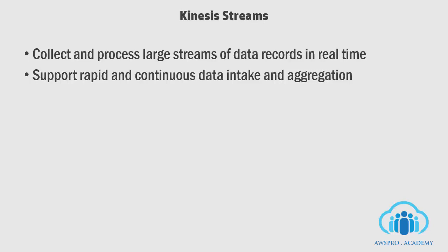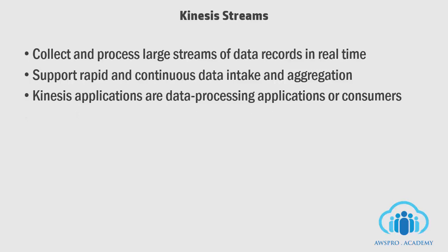The data processing application which consumes data from Kinesis Streams is known as an Amazon Kinesis application. They read data from Kinesis Streams as data records. These applications can use the Kinesis Client Library (KCL) or SDK and they can run on any Amazon EC2 instance. The processed records can be sent to dashboards, used to generate alerts, dynamically change pricing strategies, and send data to a variety of other AWS services.